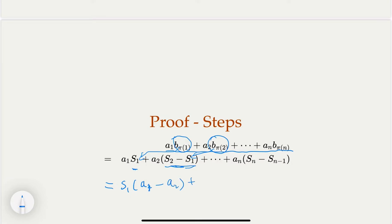However, you notice that you can combine here: S_1 is going to be a_1 times (a_1 - a_2), plus S_2 times (a_2 - a_3), and so on and so forth. What you're left with is a_n S_n at the end, and you may have S_{n-1} times (a_{n-1} - a_n).